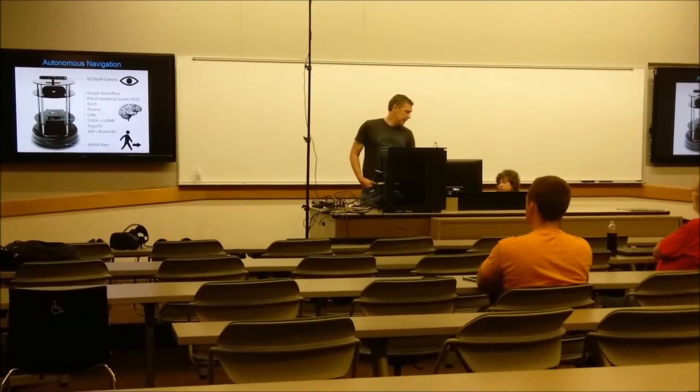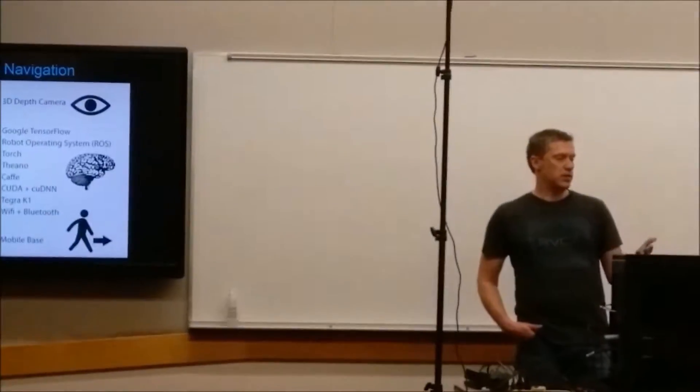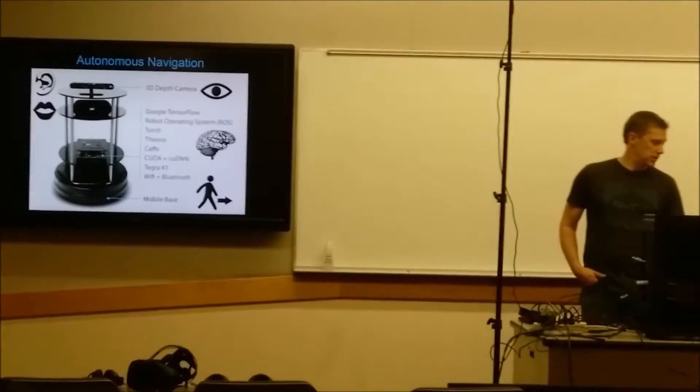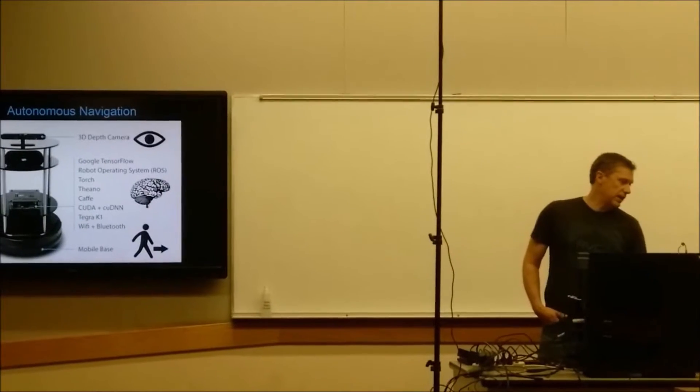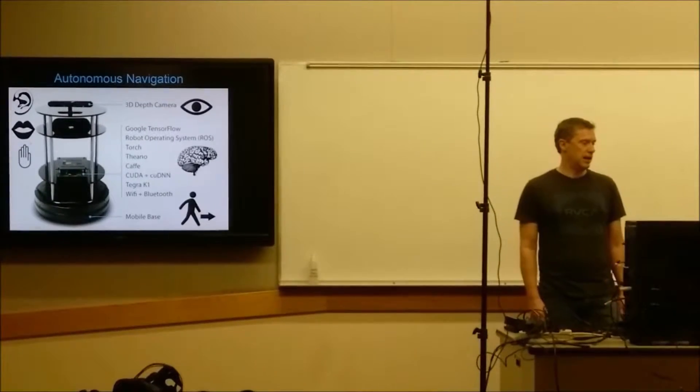If you look at what's the bare minimum of what makes up an autonomous robot, it falls into these three spots. You have to have some sort of a sensor. In this case, it's a 3D depth camera. And it's always going to have the mobile component.